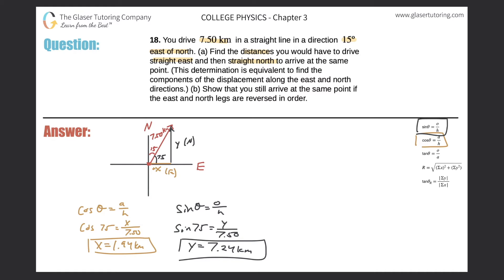So you would have to drive straight east 1.94 kilometers and then north 7.24 kilometers. Part b says to show you still arrive at the same point if the east and north legs are reversed. The math will all work out the same, but the angles used will change slightly.